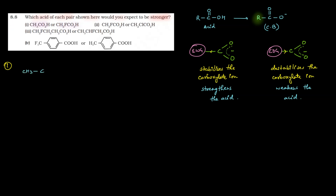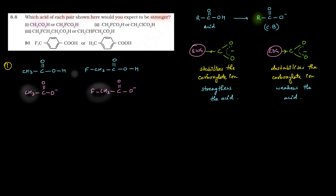The structures are: CH₃-C(=O)-OH and CH₂F-C(=O)-OH. We need to identify which is the stronger acid. When H⁺ leaves, we get the carboxylate ions. For the first structure, the CH₃ group pushes electrons toward the carboxylate — this is the +I effect (electron donating).